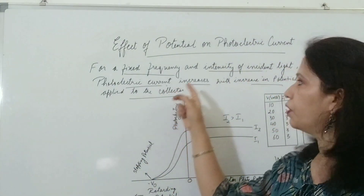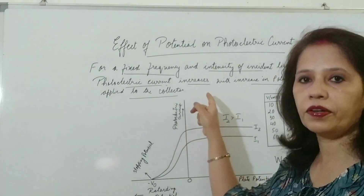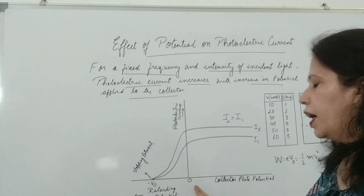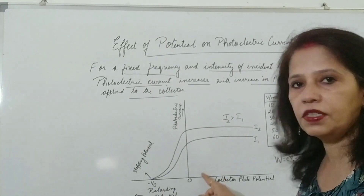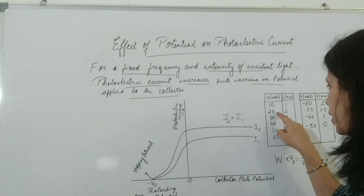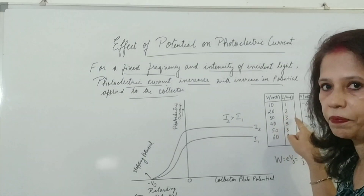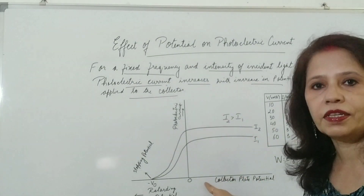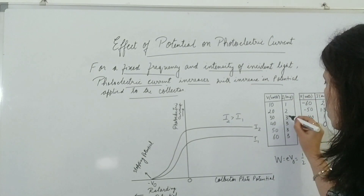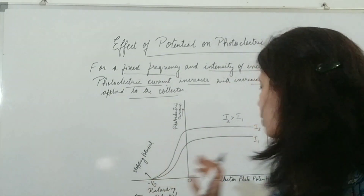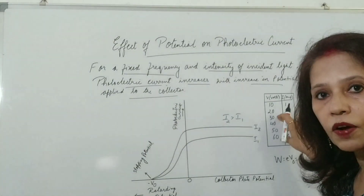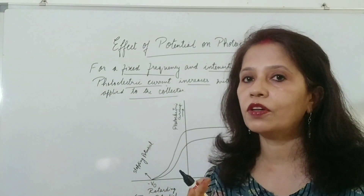For a fixed frequency and intensity of incident light, photoelectric current increases with increase in potential applied to the collector. As the collector plate potential voltage increases, the current also increases — at 10 volts: 1 ampere, 20 volts: 2 amperes, 30 volts: 3 amperes. Then, after further increase in collector plate potential, the current saturates — that is, the current becomes constant and does not increase further.